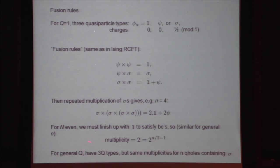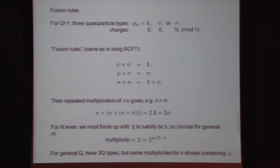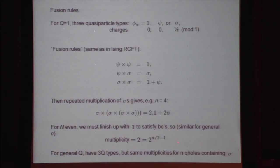For the more general case with general Q, it turns out we get 3 times Q quasiparticle types in general, with slightly different charges. The charges are defined modulo 1, with values for the identity being multiples of 1 over Q, and Sigma charges being 1 over 2Q plus a multiple of 1 over Q. As far as the multiplicities of quasi-hole states are concerned, since the charge sector is abelian, the multiplicities for N quasi-holes work out to be exactly the same form.